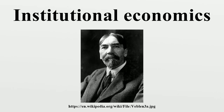In The New Industrial State, Galbraith argues that economic decisions are planned by a private bureaucracy — a technostructure of experts who manipulate marketing and public relations channels. This hierarchy is self-serving; profits are no longer the prime motivator, and even managers are not in control. Because they are the new planners, corporations detest risk, requiring steady economic and stable markets. They recruit governments to serve their interests with fiscal and monetary policy. While the goals of an affluent society and complicit governments serve the irrational technostructure, public space is simultaneously impoverished. In Economics and the Public Purpose, Galbraith advocates a new socialism as the solution, with nationalization of military production and public services such as health care, plus disciplined salary and price controls to reduce inequality and hamper inflation.